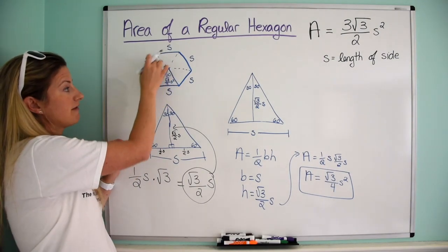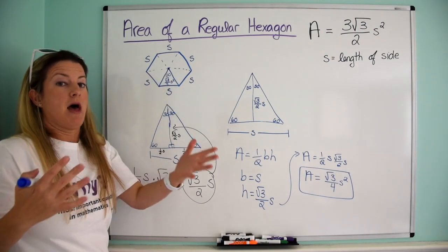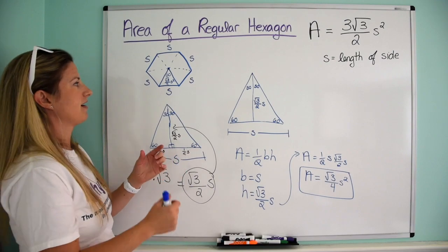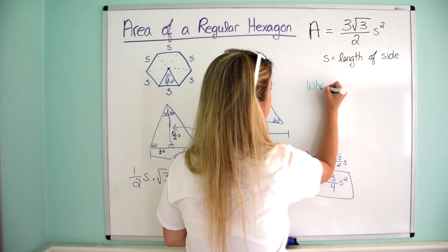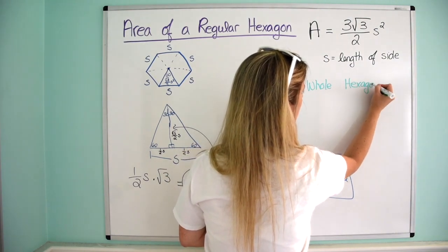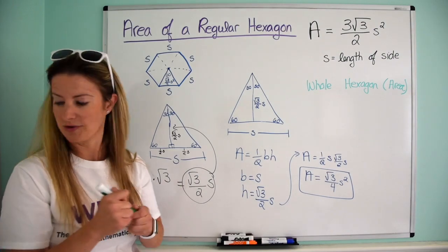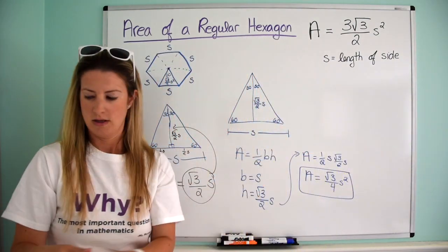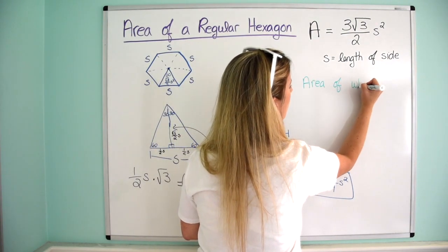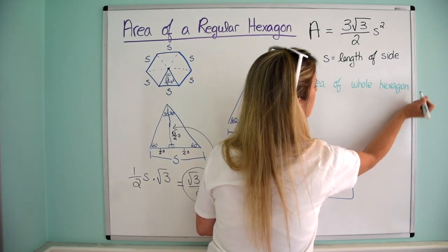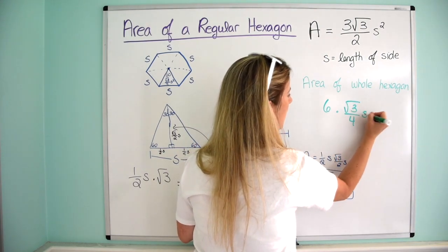How many of these triangles do I have? They're all identical because I've got a regular hexagon — one, two, three, four, five, six. So if one triangle has an area of root three over four s squared, then six of them have an area of six times root three over four s squared. So the area of the whole hexagon is six times root three over four s squared.